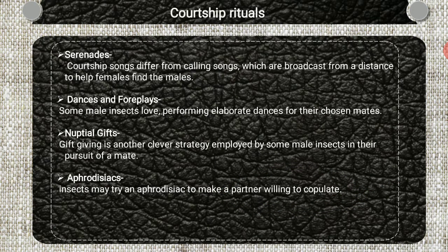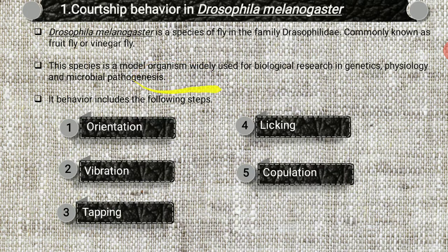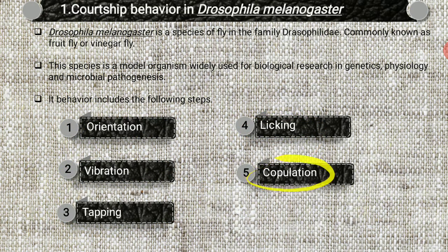Next we move on to the courtship behavior in Drosophila melanogaster. Drosophila melanogaster is a species of fly in the family Drosophilidae, commonly known as the fruit fly or vinegar fly. This species is a model organism widely used in biological research in genetics, physiology, and microbial pathogenesis. The courtship behavior involves orientation, vibration, tapping, licking, and copulation.